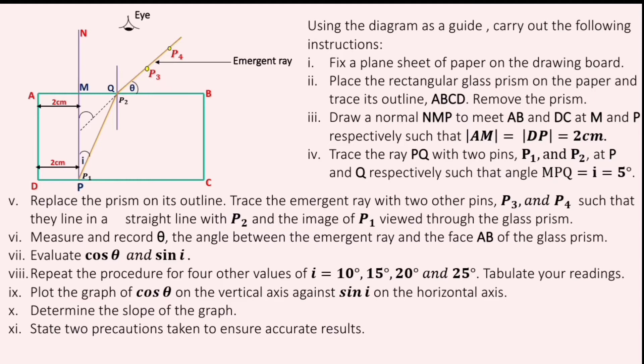Tabulate your readings. Plot the graph of cos theta on the vertical axis and sin i on the horizontal axis. Determine the slope of the graph, and lastly state two precautions taken to ensure accurate results.